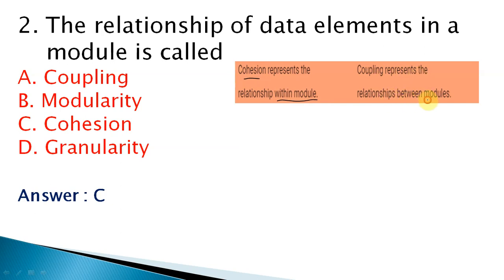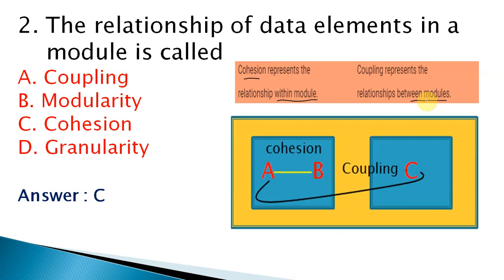Cohesion is inside the module; coupling represents the relationship between modules. To remember: cohesion means within the module, coupling means outside the module — the relationship between one module and another external module.